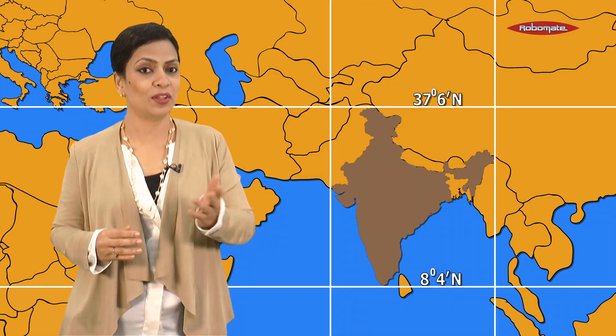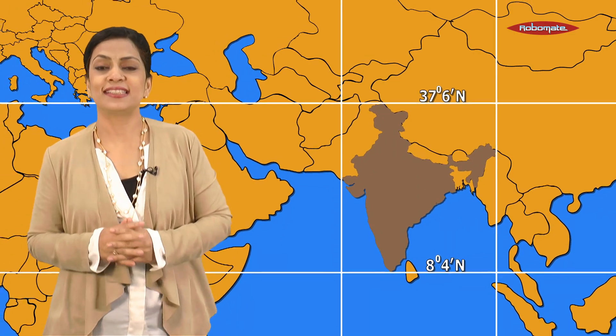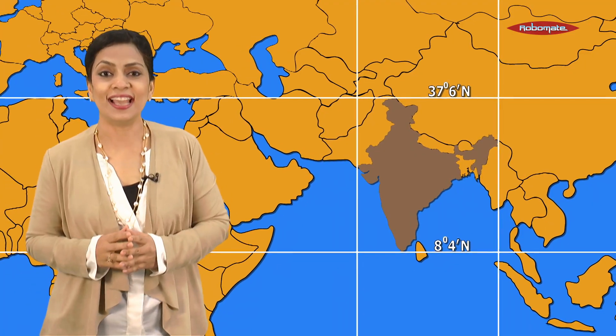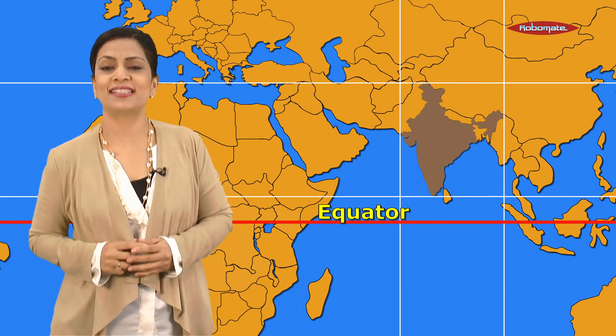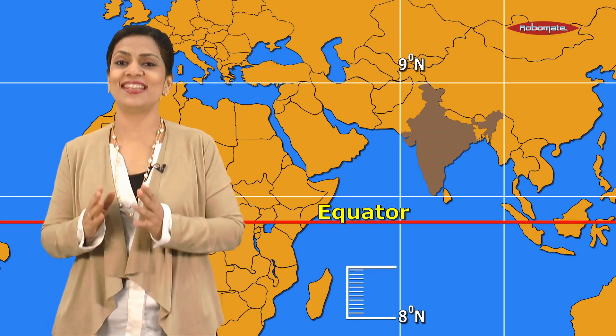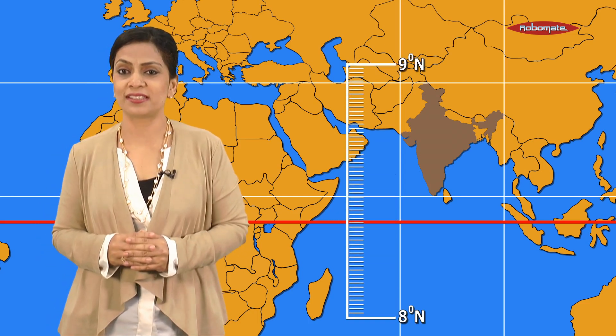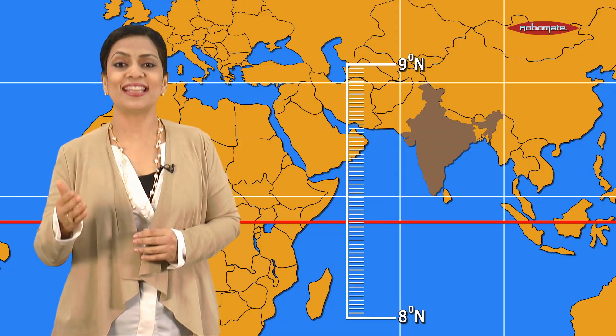The mainland of India extends between latitudes 8 degrees 4 minutes north and 37 degrees 6 minutes north. This means that the southern tip of India lies at 8 degrees 4 minutes north, away from the equator. Each degree is divided into 60 minutes, so we say that India lies between 8 degrees and 4 minutes.